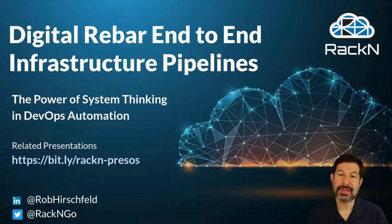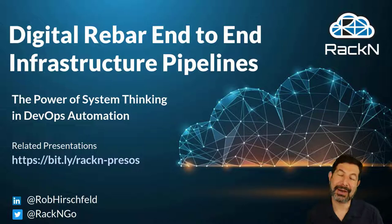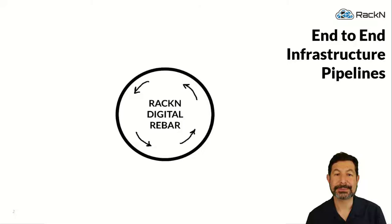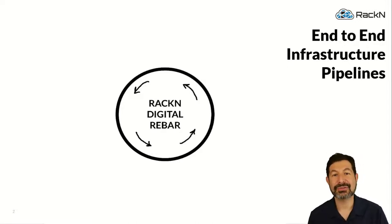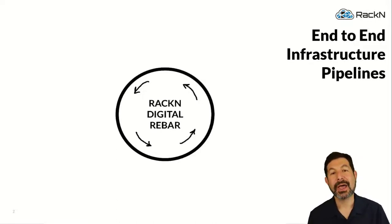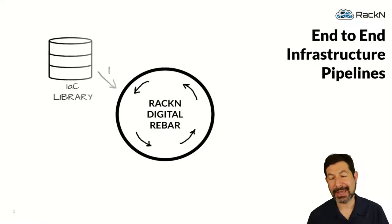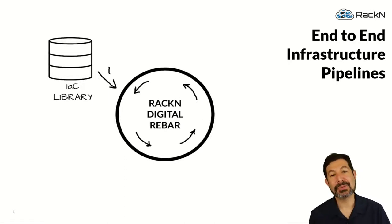What we have found through working with customers is that this systems approach to doing infrastructure automation completely changes how we think of infrastructure and automation. It transforms the outcomes for people in powerful, remarkable ways. Let me walk you through how this works in Digital Rebar. It all starts at the center with Digital Rebar, but the goal is not just to use Digital Rebar, but to actually create a cycle of improvement — a continuous feedback loop in which we're feeding forward the learnings from one customer, one project, one team, one site, into the next.